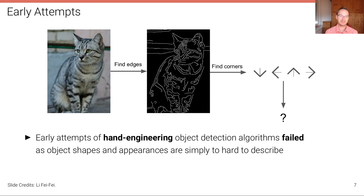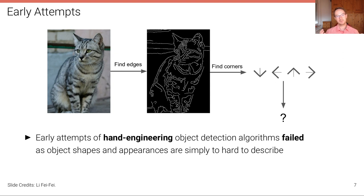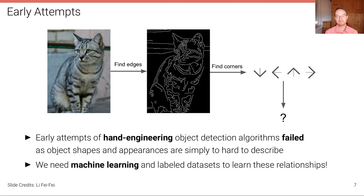How can we classify or categorize an image? Early attempts tried to solve this problem via hand engineering — coming up with algorithms and manually engineered rules. For example, given an image, we might find edges using an edge detector, and then based on the relationship between edges and corners, using simple rules, describe what's in the image and infer the class. But as you can already see, these early attempts horribly failed, because object shapes and appearances are simply too hard to describe manually. That's really why machine learning and labeled datasets play a fundamental role.